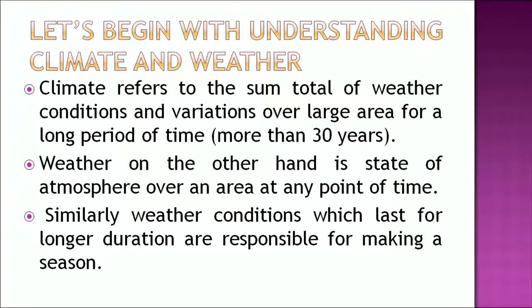Now let's begin with understanding the two simple terms: climate and weather. Climate refers to the sum total of weather conditions and variations over a large area for a long period of time — that is, about more than 30 years. Weather, on the other hand, is the state of atmosphere over an area at any point of time. Weather conditions which last for longer duration are responsible for making a season.